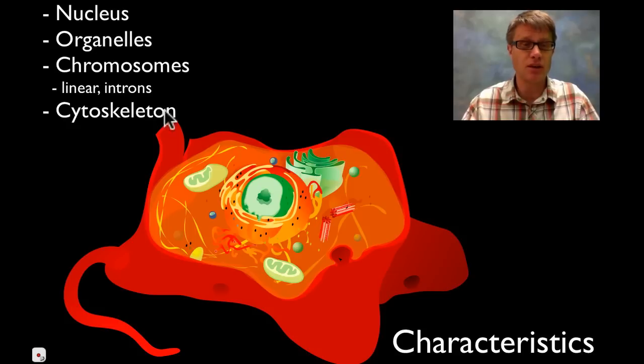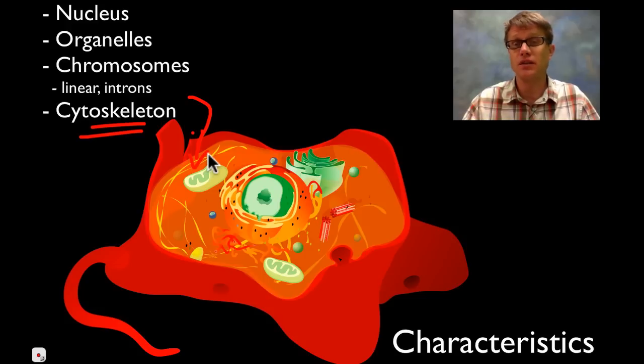Another characteristic is going to be the cytoskeleton. The cytoskeleton, I'd point to these right here, are going to give us structure on the inside of the eukaryotic cells. Now there is some structure in bacteria and archaea, but it's not as definitive as that found in the cytoskeleton of eukaryotic cells.